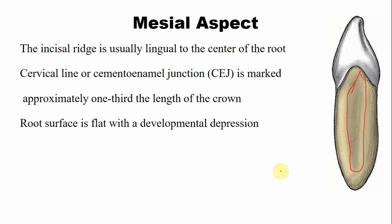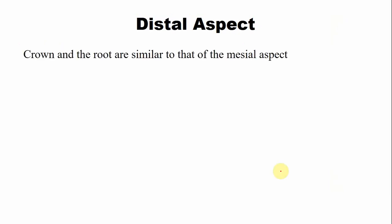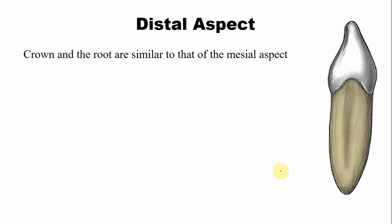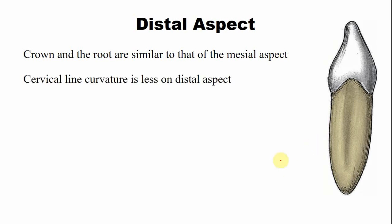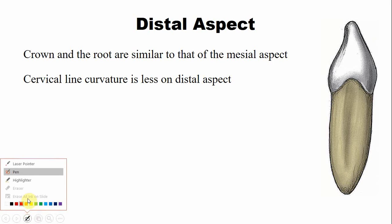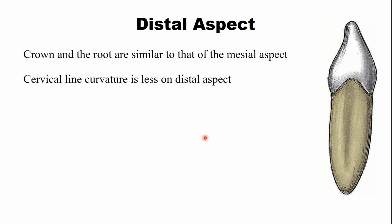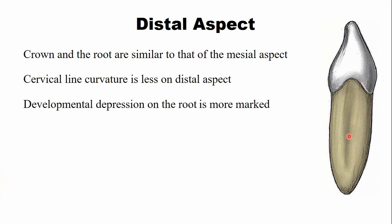From the distal aspect, the crown and root are similar to that of the mesial aspect because the crown is symmetrical from both sides, with few differences. The cervical line curvature is less compared to the mesial side. There is a developmental depression on the root surface on the distal side, and this developmental depression is more marked compared to that of the mesial surface of the same tooth.